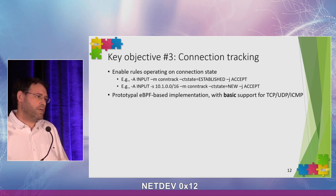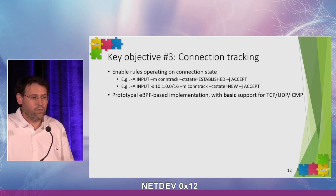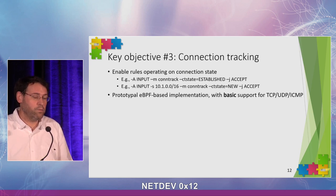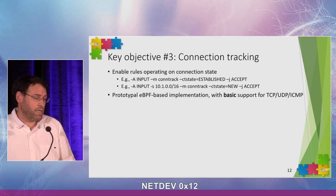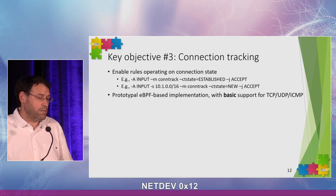The third objective is connection tracking. Connection tracking is very important — many IP tables setups use it to allow only established connections and so on. We had to support it. Unfortunately, the connection tracking available in Linux is not accessible from an eBPF program, because it executes in NetFilter and there are no BPF helpers to access that information. So we had to implement our own connection tracking entirely in eBPF.